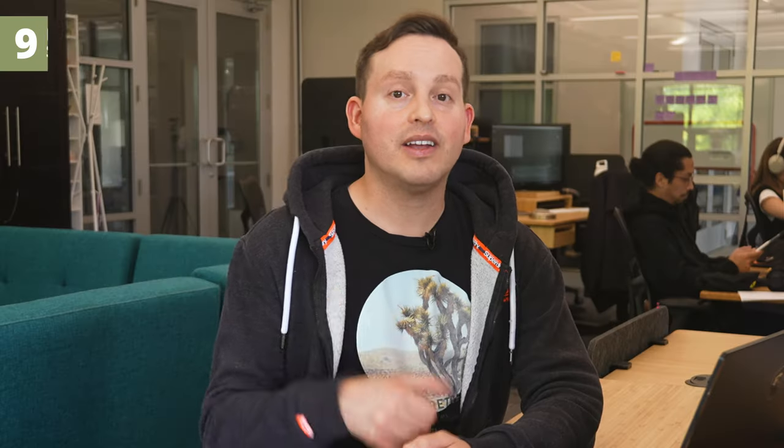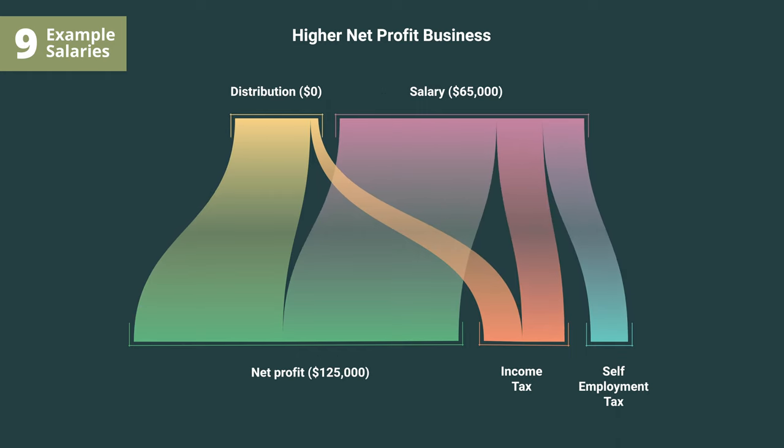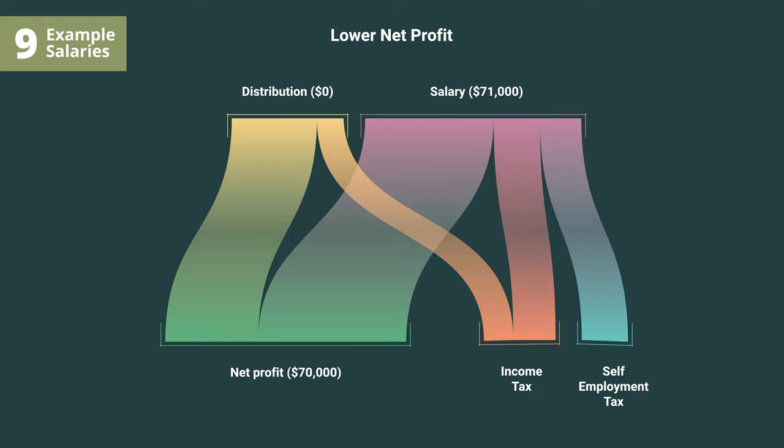S-corp reasonable salary tax examples: let's look at how you might determine a reasonable salary using different situations. For our first example, a higher net profit business: say you're a member of a marketing S-corp in Portland, Oregon. Your net profit is $125,000. Using Glassdoor, you see the average salary of a digital marketer in your area is around $60,800 a year. In this scenario, you decide to pay yourself $65,000 in wages and take a distribution of around $60,000. Now for a lower net profit business: say you're an owner of a programming S-corp in Los Angeles, California. Your net profit is $70,000 a year before your salary. Glassdoor shows the average salary of a programmer in Los Angeles is $76,150 a year. Since net profits can't meet your reasonable salary, you choose to take $71,000 for your salary and zero in distributions. You won't be fined because you're not taking a distribution. You could also opt to leave all the money in your business, but you would need to make up for this retroactively by paying yourself in the future.